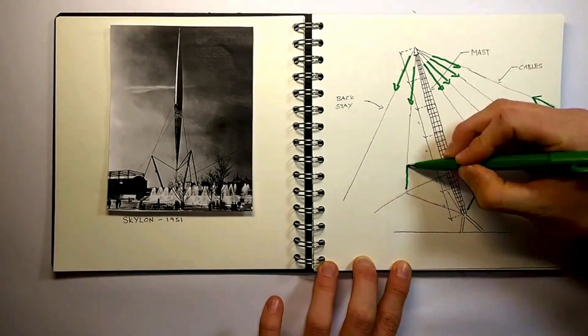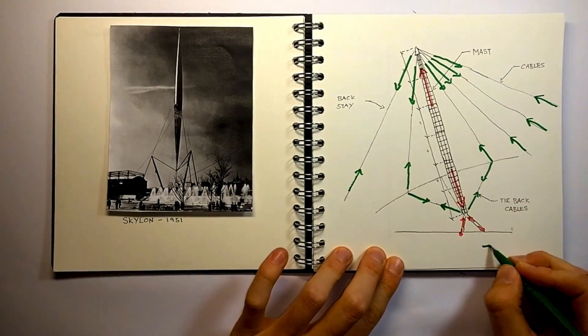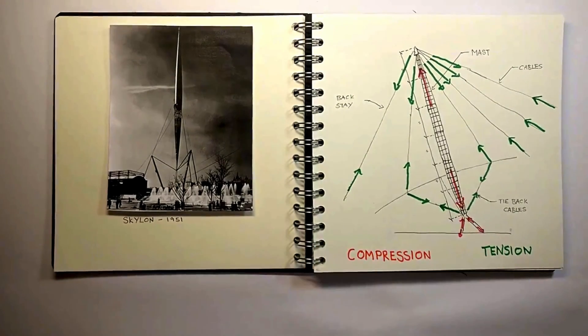As mentioned previously, the masts act mainly in compression, transferring the load from the cables down to the ground.